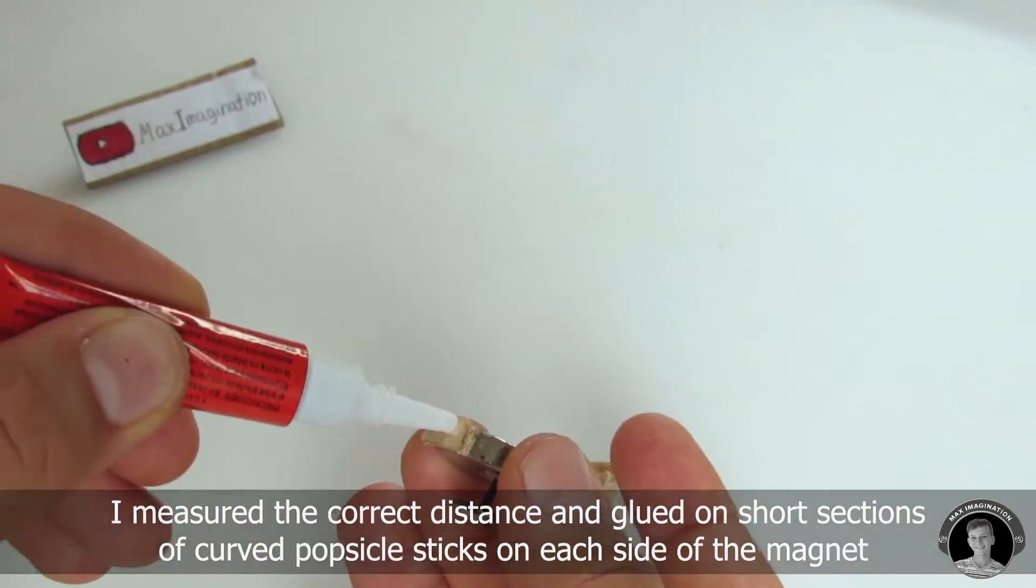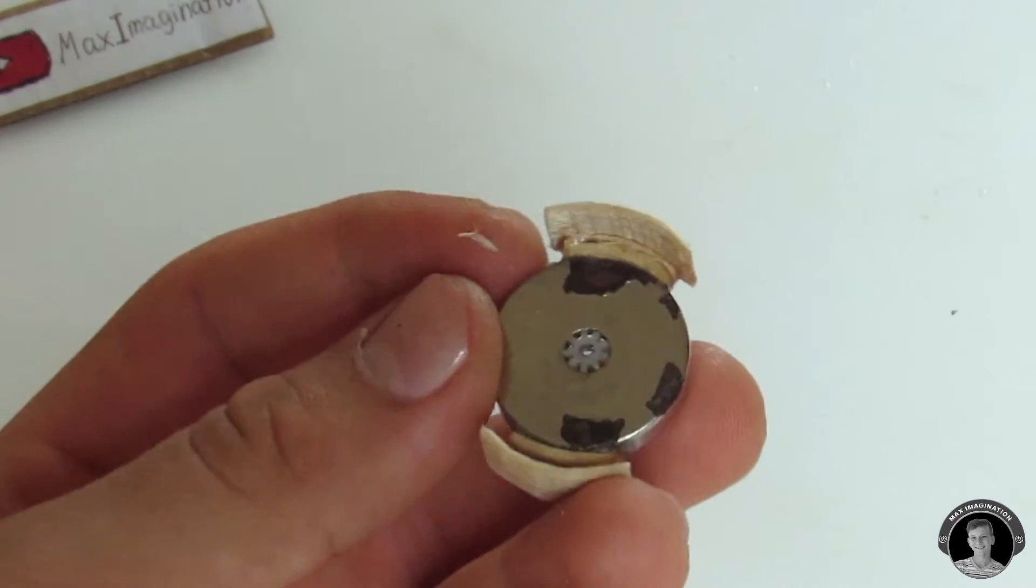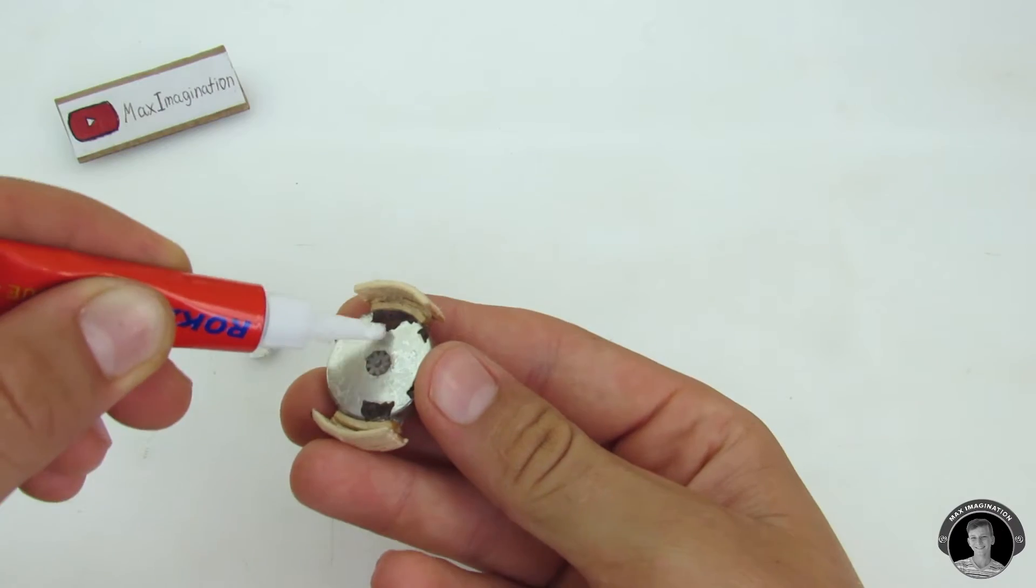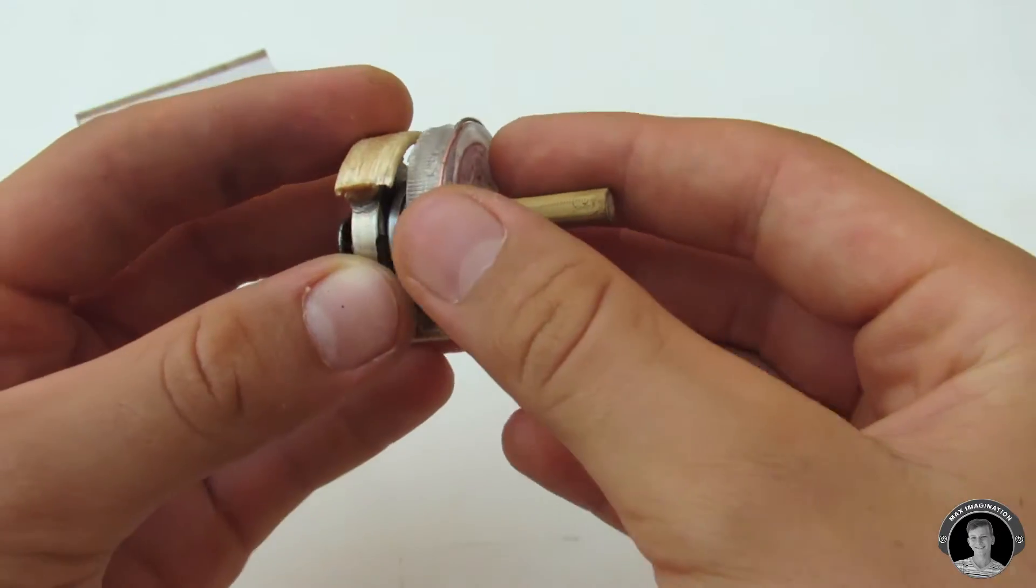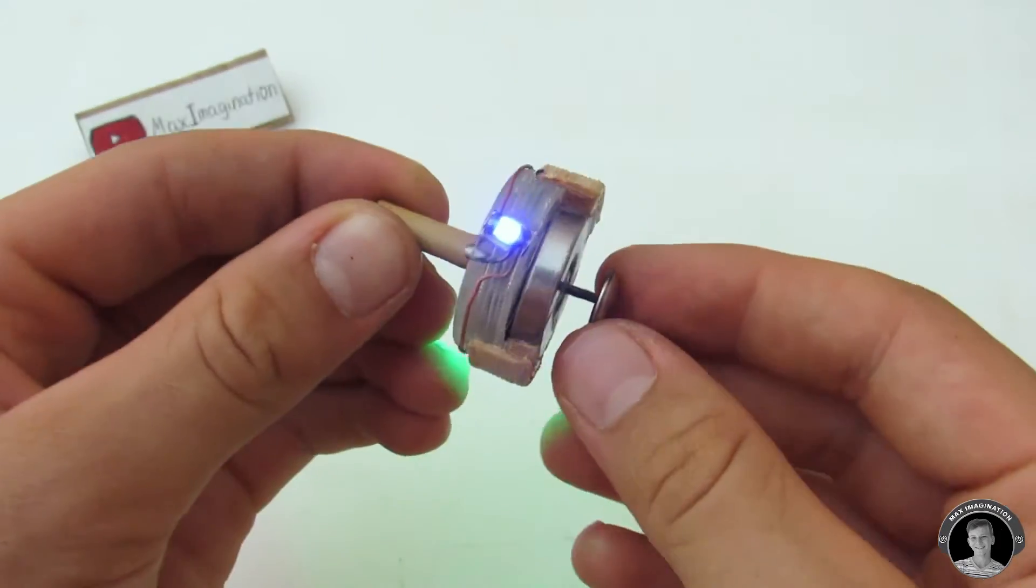I figured out how the top part of the LED Levitron can clip onto the bottom part, the one with a magnet, simply by gluing on a few layers of popsicle sticks that are a bit curved. Then I can snap the two parts together and take them apart whenever I want to. I super glued the metallic contact plate straight onto the magnet.